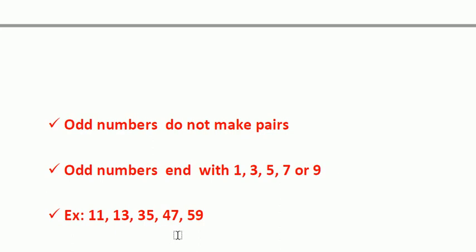Forty-seven ends with 7, and 7 is an odd number, so forty-seven is an odd number. Fifty-nine ends with 9, and 9 is an odd number, so fifty-nine is an odd number. So now it is very clear what even and odd numbers are and what their properties are.